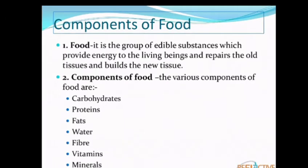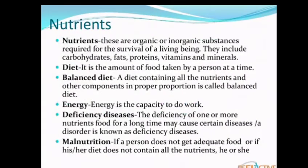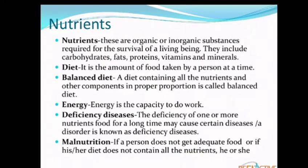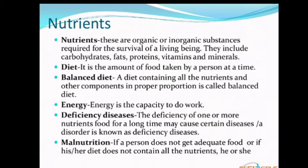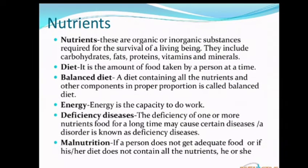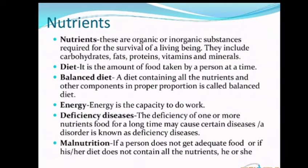The components of food include carbohydrates, proteins, fats, vitamins, minerals, dietary fiber, and water. Nutrients are the organic or inorganic substances required for the survival of a living being. Food is a mixture of various chemical substances which we need for energy, growth, and to remain healthy, and these chemical substances are called the nutrients of food.